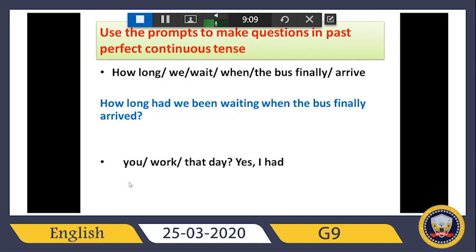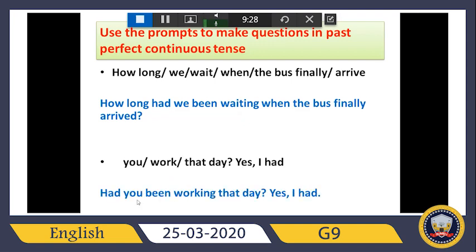The second one is a yes/no question — it's too easy. Just start with 'had,' then the subject 'you,' then 'been,' then verb plus -ing 'working,' then continue, then a question mark: 'Had you been working that day?' — answer: 'Yes, I had.' Thank you very much and goodbye.